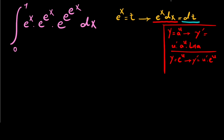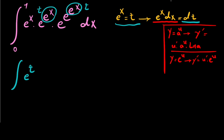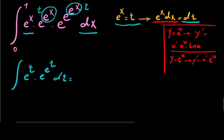So in our integral, instead of e to the power of x times dx we write dt. We now have the integral of e to the t times e to the e to the t, and instead of e to the power of x times dx we write dt. This gives us a slightly easier integral to solve.